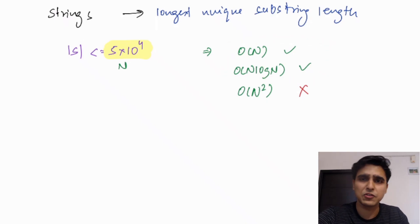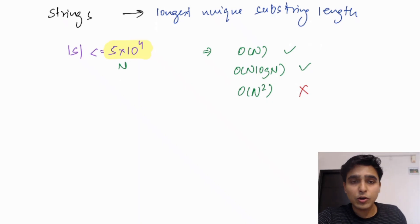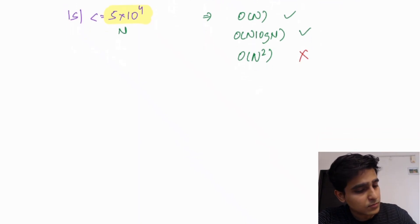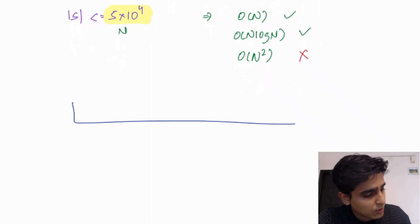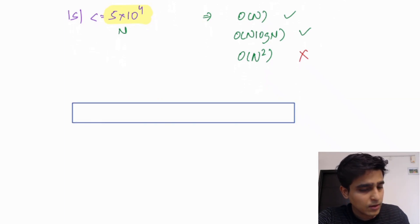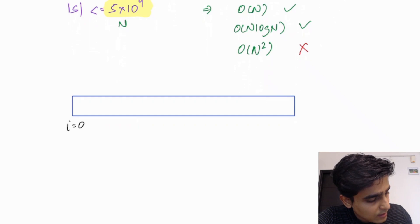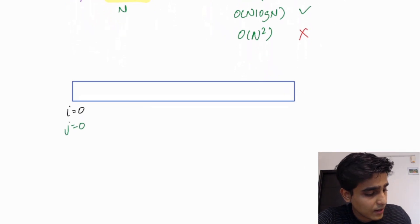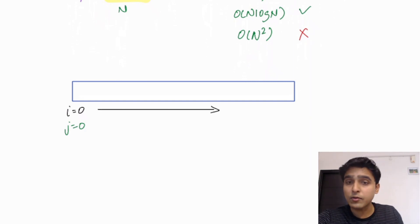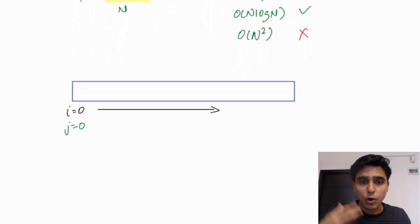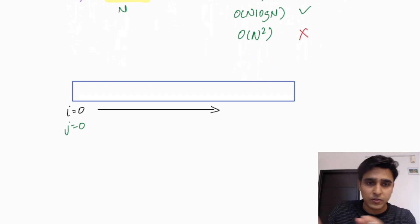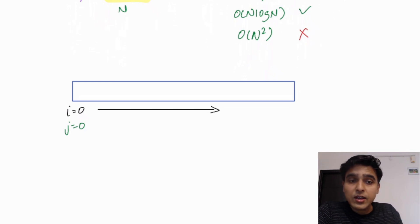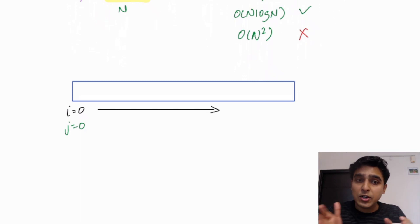For this problem we can use a two-pointer approach. We start two indexes: i equals 0 and j equals 0. As i moves forward through the array, it accumulates characters. We store all the characters present up to i, and if there is any repeating character, we try to remove that character from our storage.